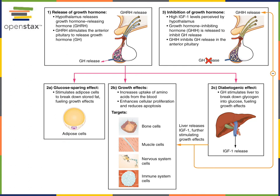In the liver, growth hormone has a diabetogenic effect: it increases the breakdown of glycogen, a polysaccharide that functions as a storage molecule for glucose. As glycogen is broken down, glucose is released from the liver into the blood, increasing blood glucose levels, which can then be taken up by cells and used to fuel growth. The liver also produces a hormone known as insulin-like growth factor 1 (IGF-1) in response to growth hormone.